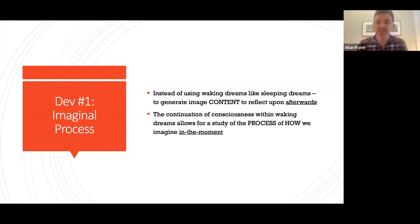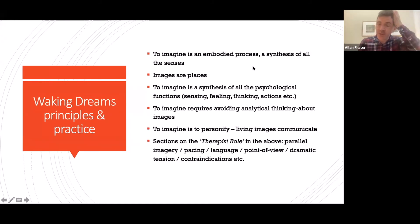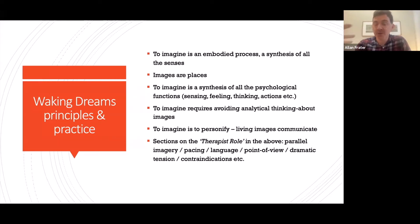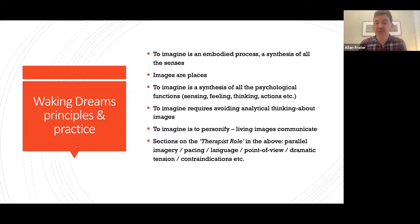Here are some of the things we get into in the book. To imagine is an embodied process — a synthesis of all the senses. Images are not just visual or optical pictures; they're also auditory, gustatory, involving smells, sensations, touch, and taste. An image is actually a place — this might seem obvious but it's neglected. When you imagine, you find yourself in a place; when you enter a dream, that's obviously a place; when you enter a movie, you imagine yourself in the landscape of the movie.